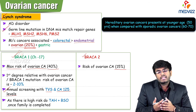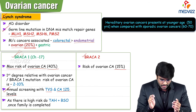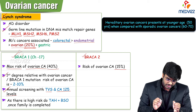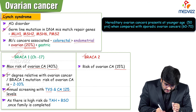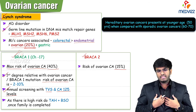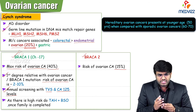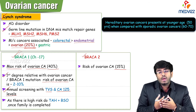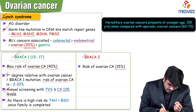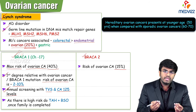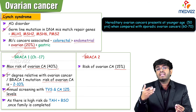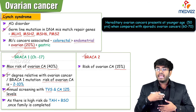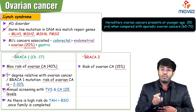CA-125 is the tumor marker for ovarian cancers. If a first-degree relative has ovarian cancer or BRCA1 gene mutation, the risk of getting ovarian cancer is around 2 to 10%. But if she herself carries BRCA1 gene mutation, her risk of developing ovarian cancer is 40%.